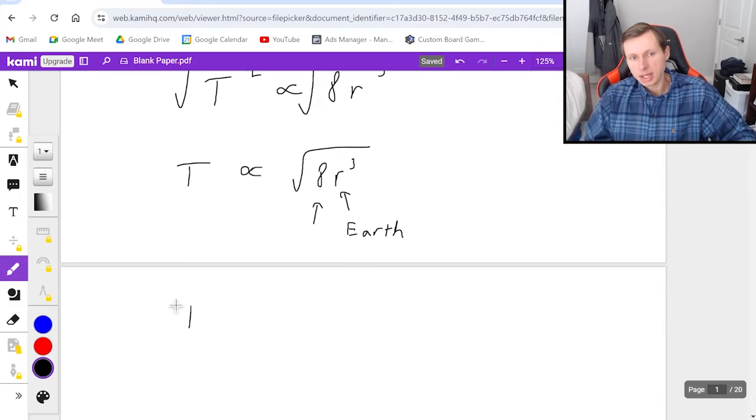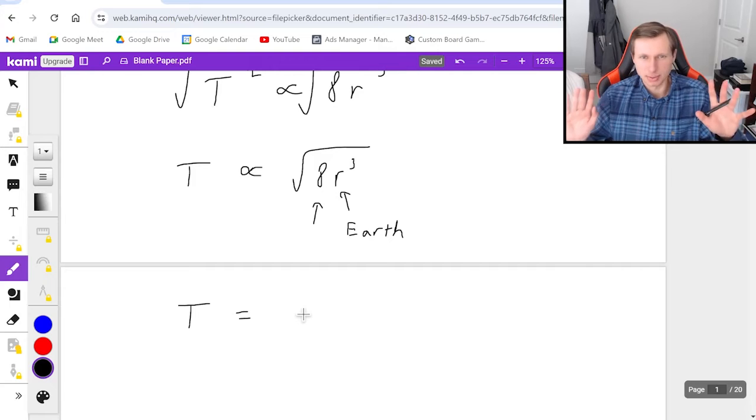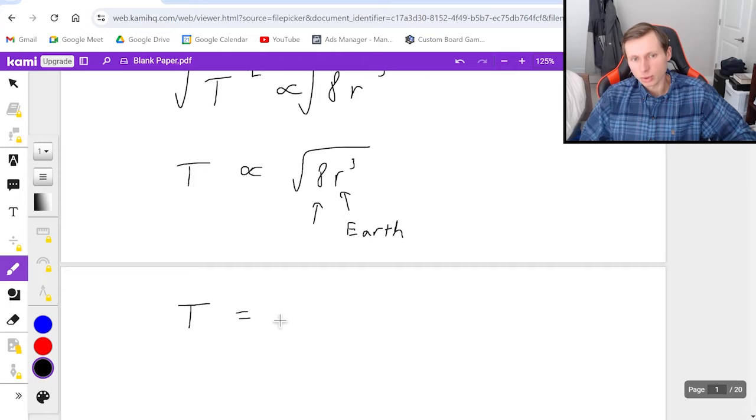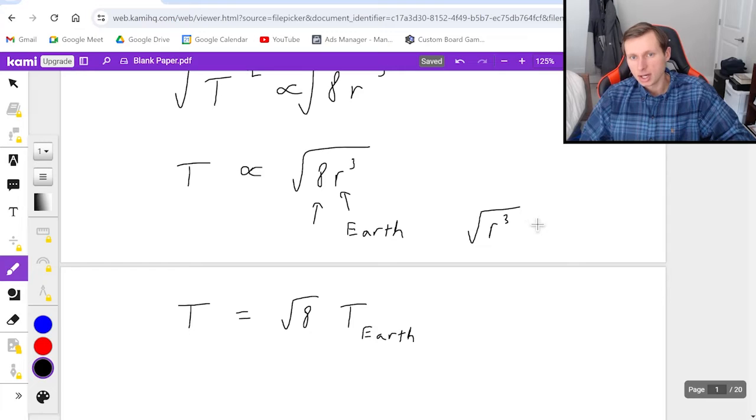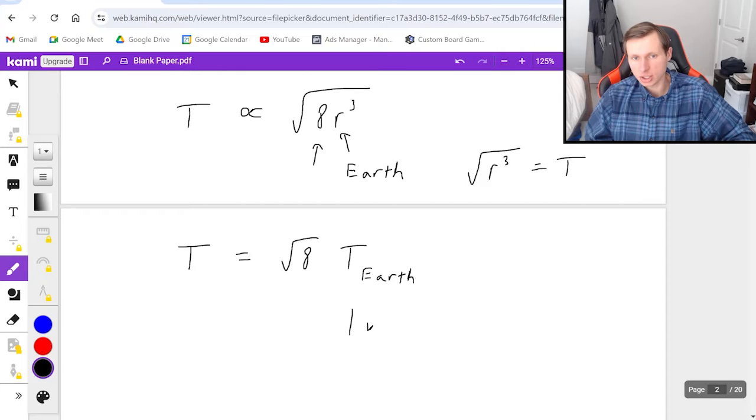Meaning the period is—I'm just going to say equal to, I know it's supposed to be proportional but I'm going to say equal to anyway, and you can too most of the time. It's equal to the square root of 8 times the period for Earth. So in other words, what did I do? I replaced the square root of r cubed—I replaced that with T. And the reason I'm allowed to do that is because both of these values are for Earth, and we know the period for Earth. We know that's one year.